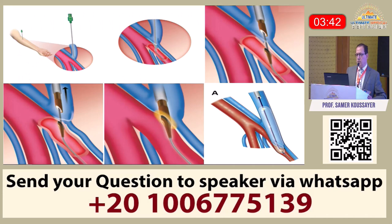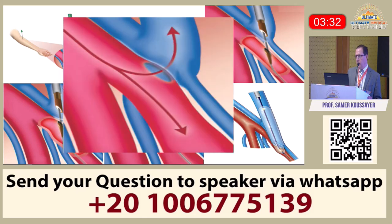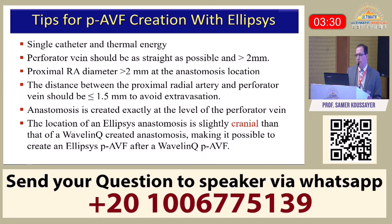In the procedure, the wire is advanced through the perforator to the proximal radial artery. The device has two pieces that capture the arterial wall and the venous wall; heat is then generated to create the fistula, which is dilated, resulting in a completed endovascular AV fistula.